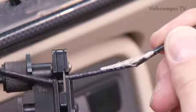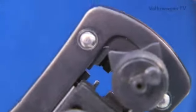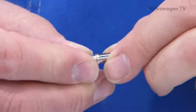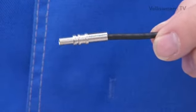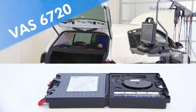If the aerial wire is damaged, it must be repaired or replaced. Use the VAS 6720 professional repair set.